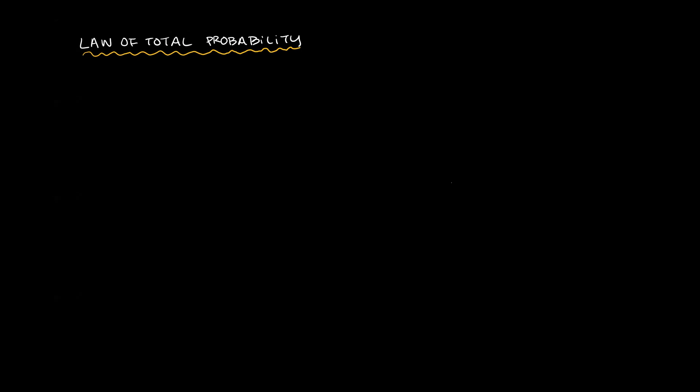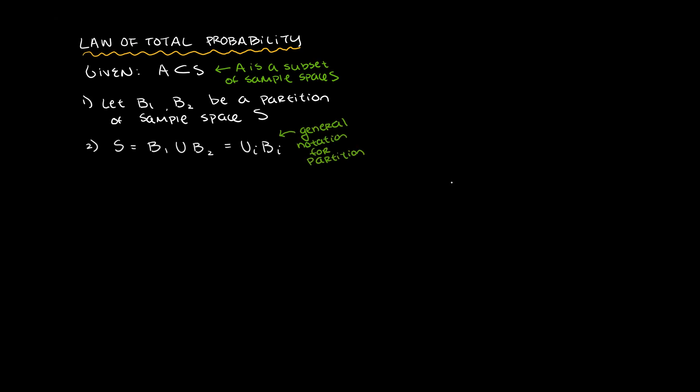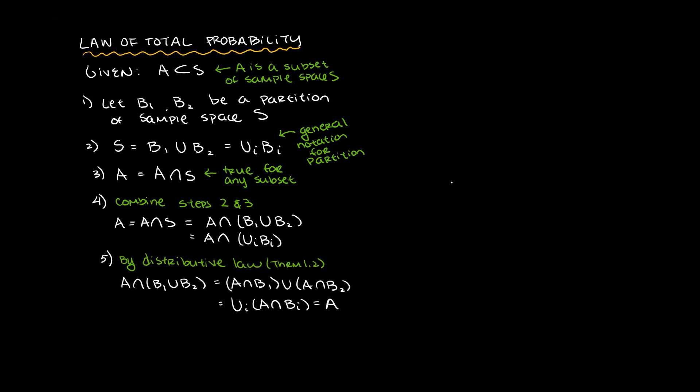Let's see how the LTP is derived, given that A is the subset of sample space S. First, take a partition of sample space S, call them B1 and B2. We know the union of a partition is the sample space. We also know that the subset A is equal to the intersection of A and S. So by plugging in steps 2 and 3, we get a new formula that can be rearranged with the distributive law.